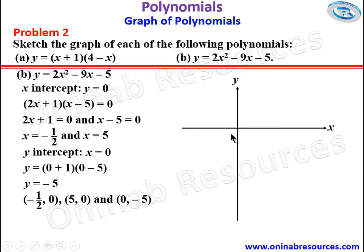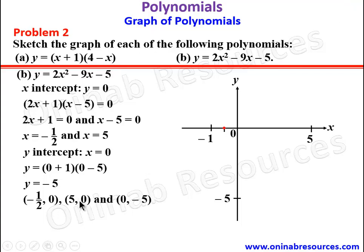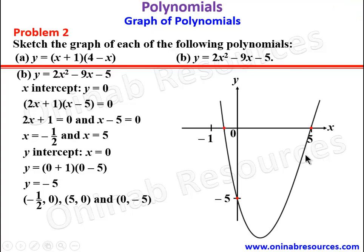Sketching this graph, we have x-axis and y-axis with the origin. We mark 1, then 5 on the positive x-axis, negative 5 on the y-axis, and negative one-half halfway between 0 and 1. We identify the three points — negative one-half comma 0, 5 comma 0, and 0 comma negative 5 — and join them to give the curve representing the graph of problem 2b.